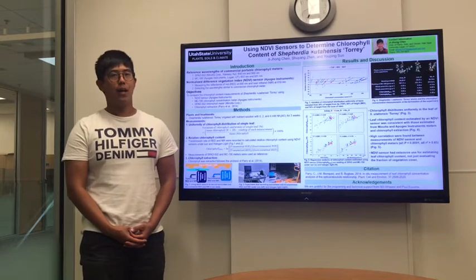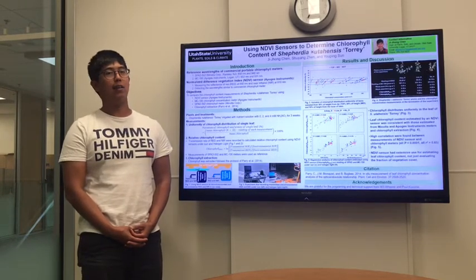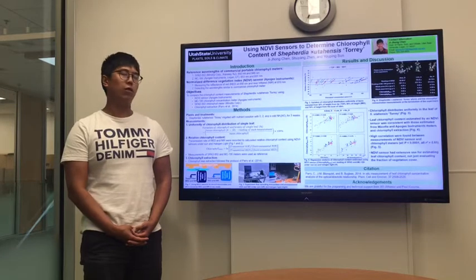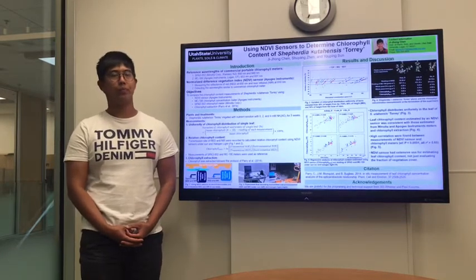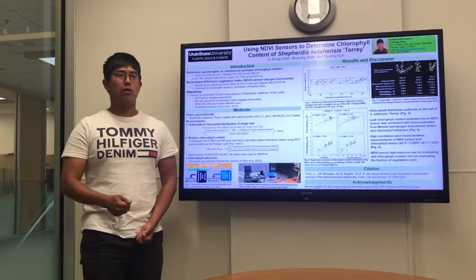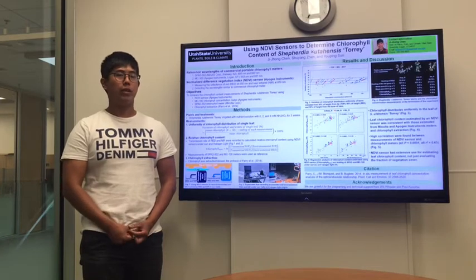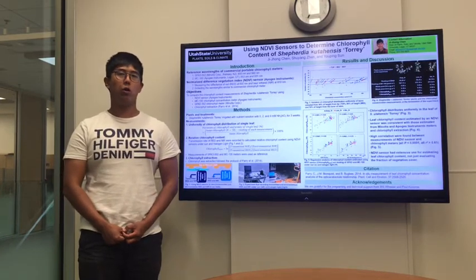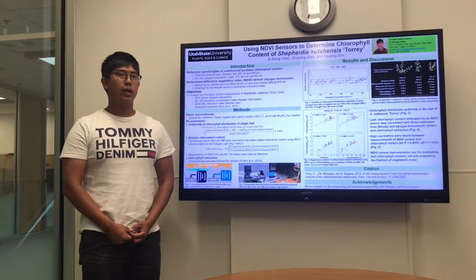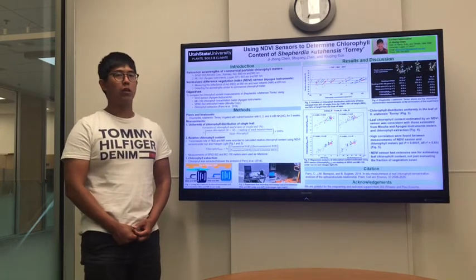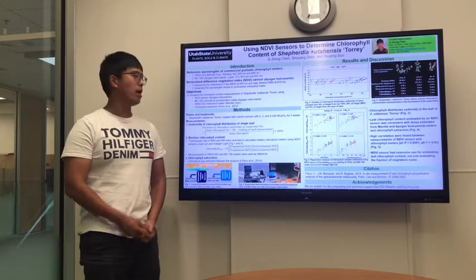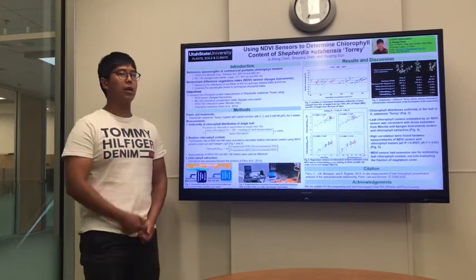After that, we recorded several data. First, we recorded uniformity of the chlorophyll distribution. We took 10 measurements using the MC100 chlorophyll meter, and then we calculated the variation of the chlorophyll distribution uniformity by the following equation.